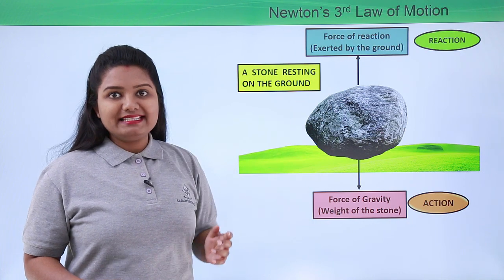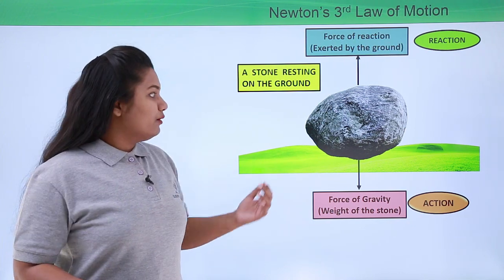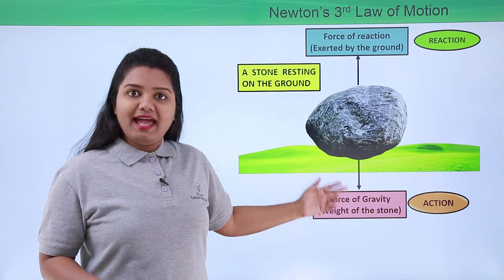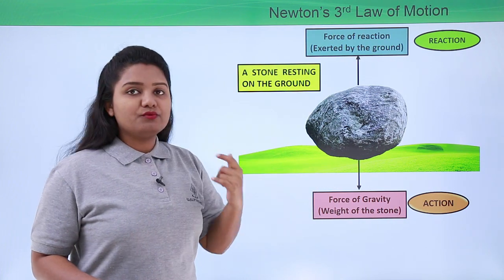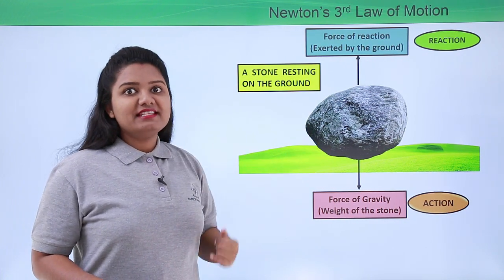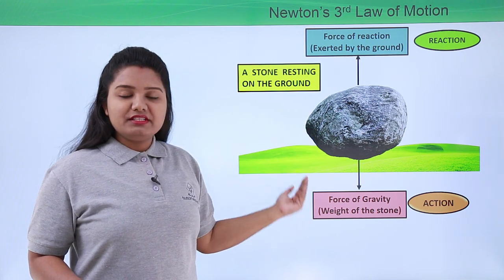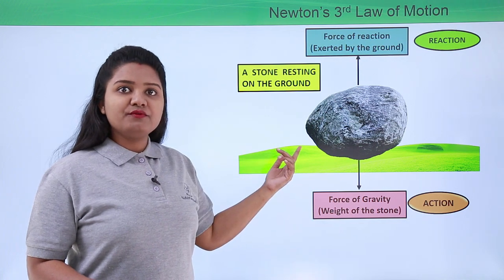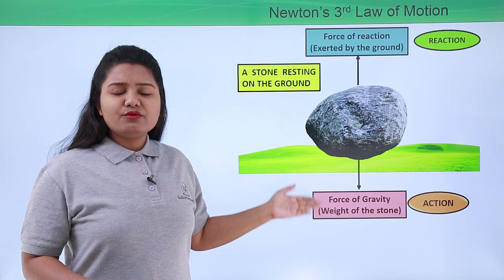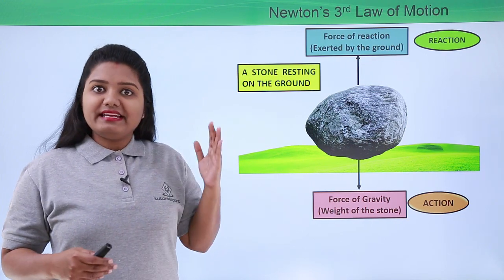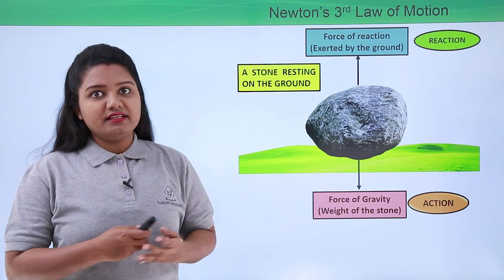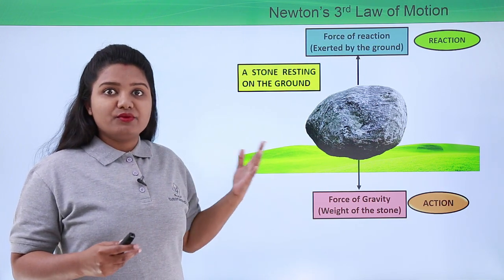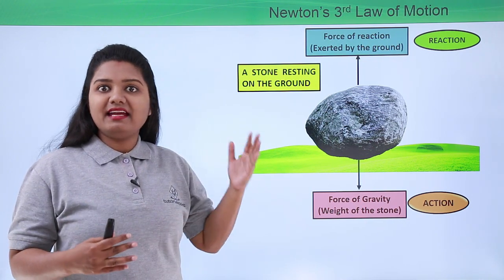So here we have a pair of forces which we call an action-reaction pair. These forces are acting on two different objects — the action force acts on the ground, and the force of reaction is what the ground exerts onto the stone, so it acts on the stone. These two forces — the action and the reaction — are exactly equal in magnitude but opposite in direction, and that is why they balance each other. We have already learned about balanced forces where forces are equal in magnitude and opposite in direction and hence add up to zero.